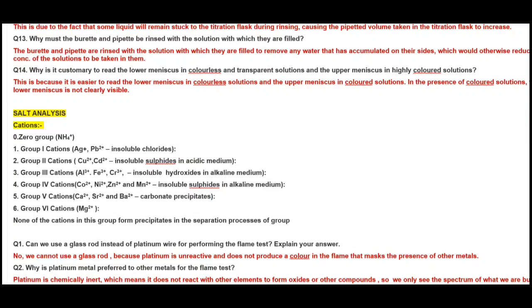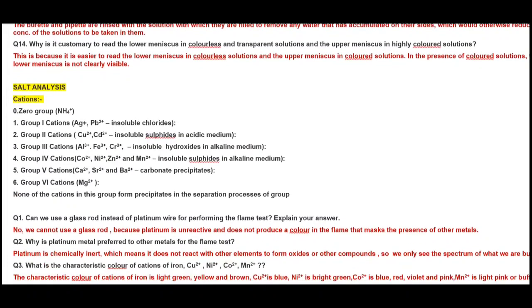I shall be putting a link of a video which deals with these two questions in detail with mathematical explanations. Why is it customary to read the lower meniscus in colorless and transparent solutions but upper meniscus in highly colored solutions? It is easy to read the lower meniscus in colorless solutions but in case of colored solutions lower meniscus is not clearly visible.